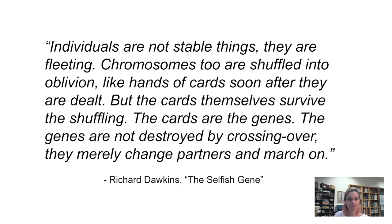Richard Dawkins from The Selfish Gene: 'Individuals are not stable things. They are fleeting. Chromosomes, too, are shuffled into oblivion, like hands of cards soon after they are dealt. But the cards themselves survive the shuffling. The cards are the genes. The genes are not destroyed by crossing over. They merely change partners and march on.' But we can get the different variants of those genes and trace them as they have shuffled around.